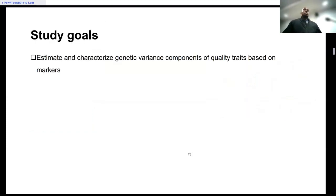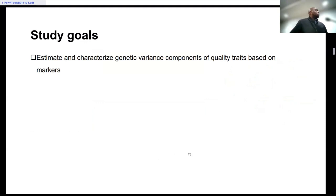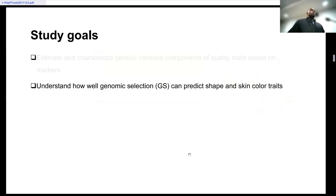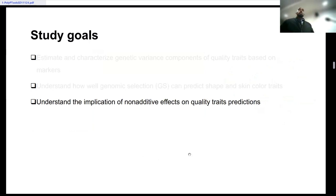Therefore, the goal of this work is to estimate and characterize the genetic variance components using markers. We also wanted to see if genomic selection can predict these quality traits well, and we're trying to see the implication of non-additive effects in predicting these quality traits.